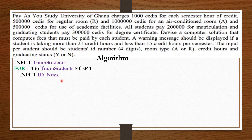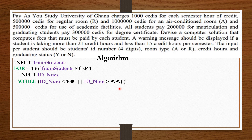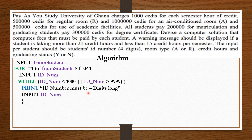We want to make sure that the student's ID number is a four-digit number, so we set a while loop. The condition is that if the user's ID number is not in the range of four-digit numbers — that is from 1000 to 9999 — then we should ask the student to enter the four-digit ID number again. This while loop continues to run until the student enters a four-digit number.